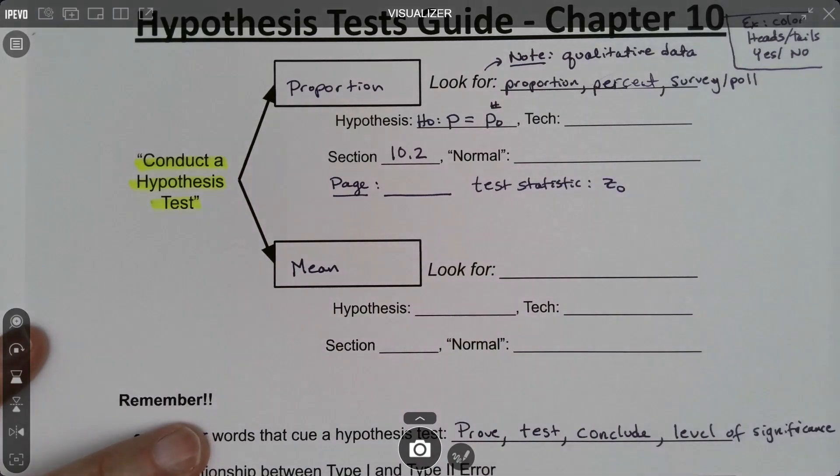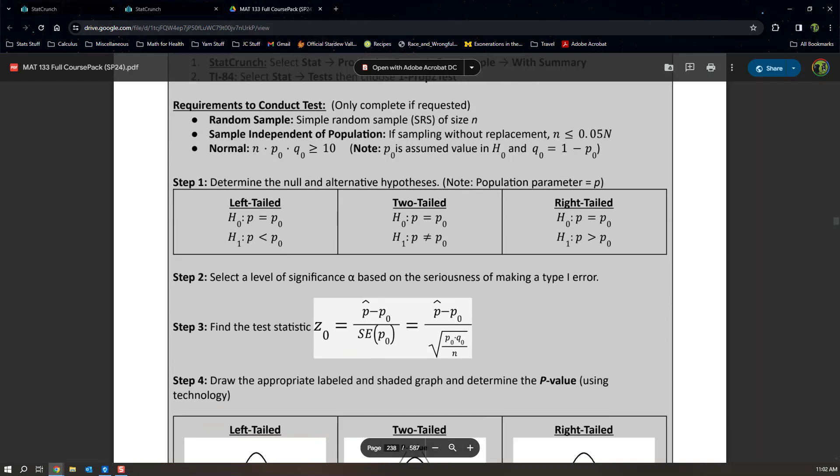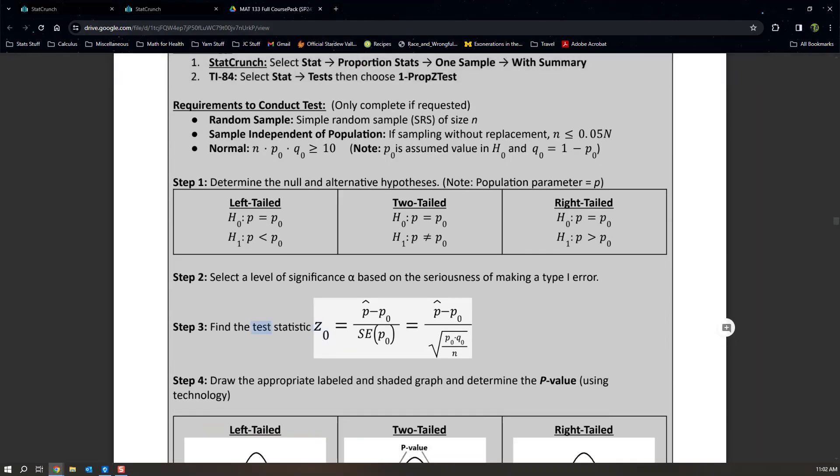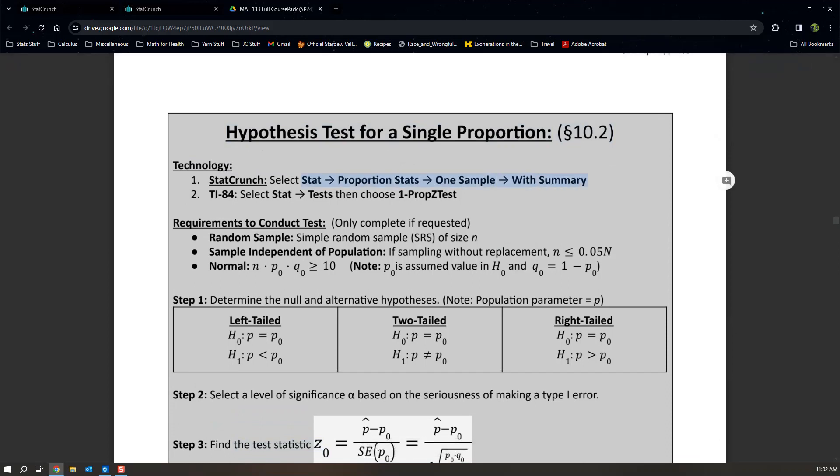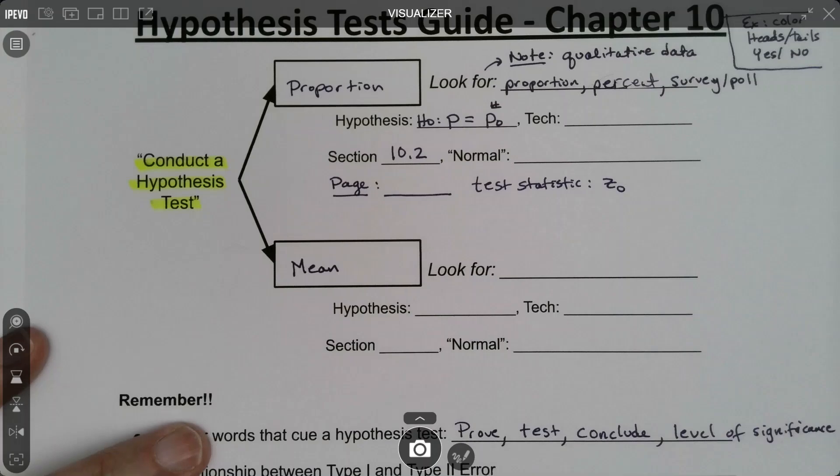Your test statistic is z₀. That's how you can tell. If I look at it on that page, if I look at step three, I can see it's z₀. I'm using the z-curve here. z₀ is my test statistic. This particular page is the hypothesis test for a single proportion, and I can see the StatCrunch right there: Stat, Proportion Stat, One Sample with Summary.